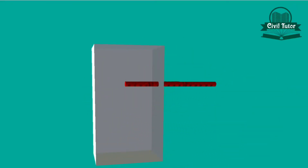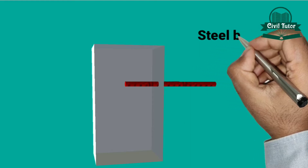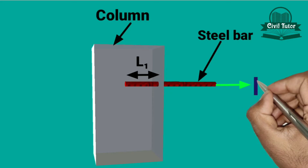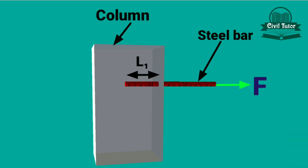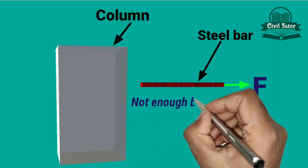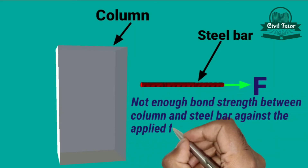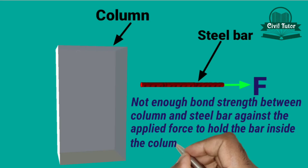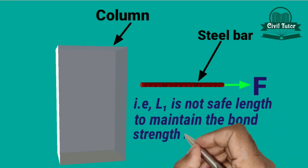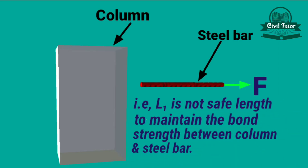For understanding the concept of development length, let's consider a steel bar embedded in a column to a length L1, and now let's apply some force F on the other side of the bar. Due to the applied force F, the steel bar will come out of the column, which indicates there is not enough bond strength between the column and steel bar to hold the bar inside. That is, length L1 is not a safe length to maintain the bond strength.